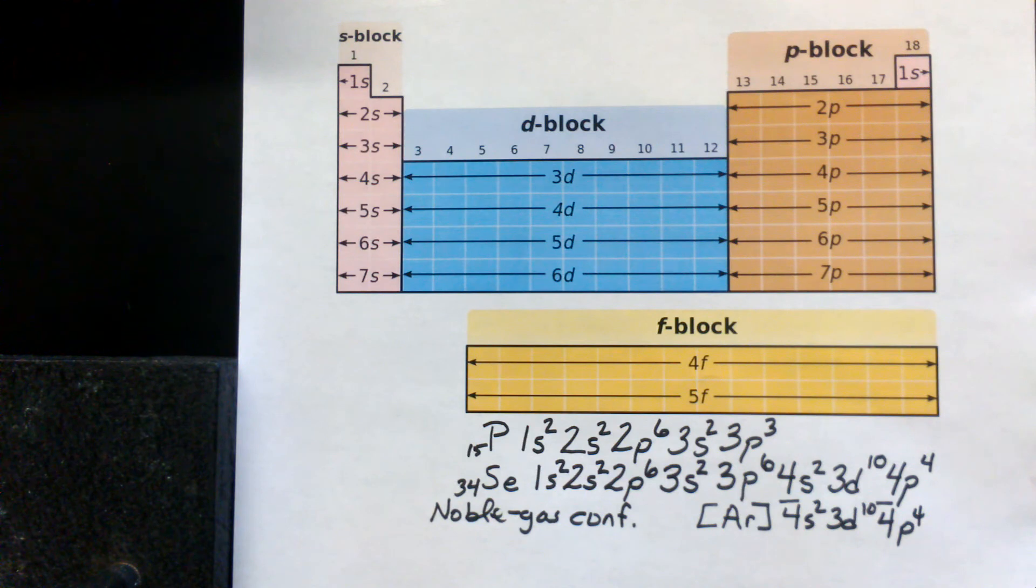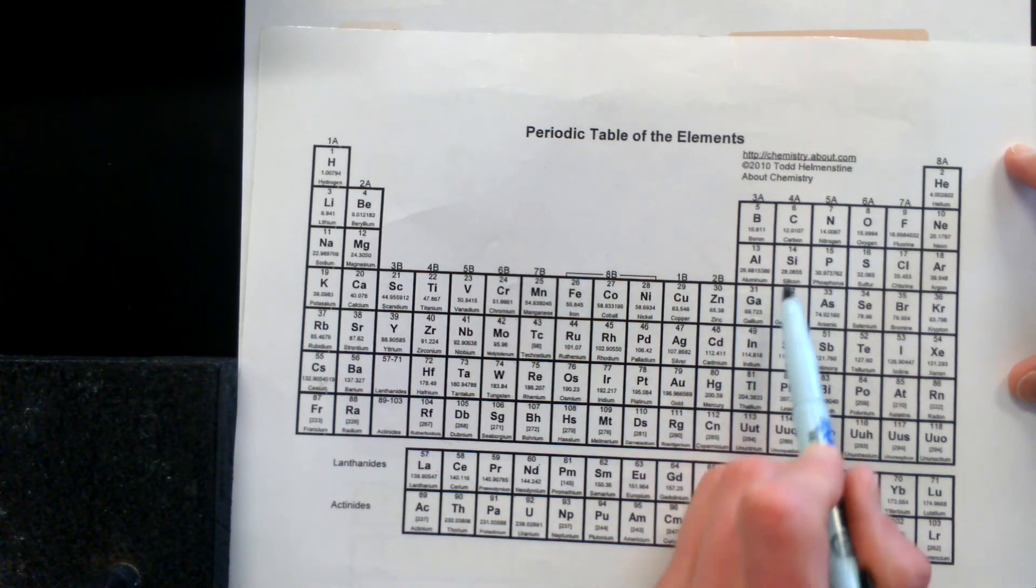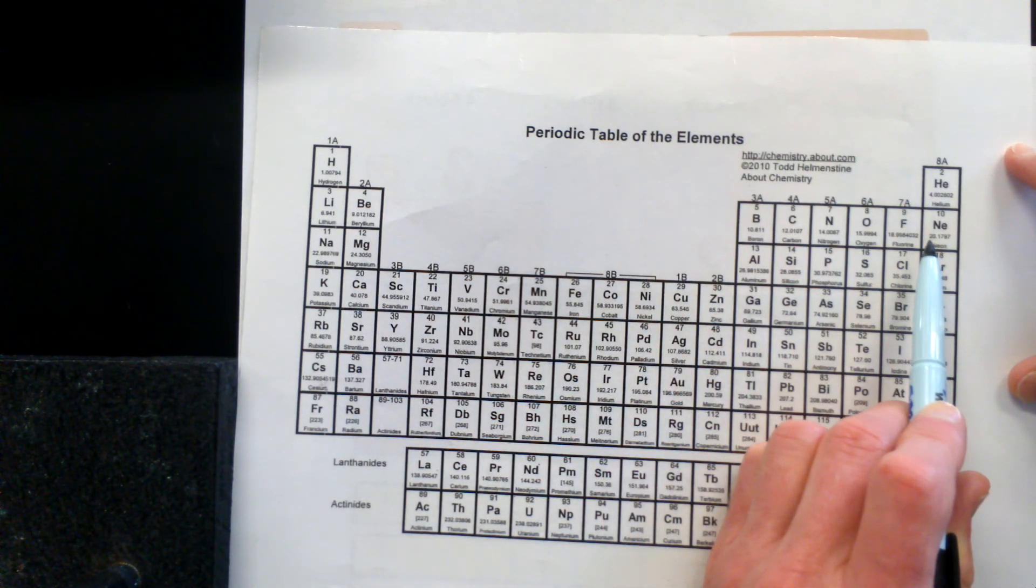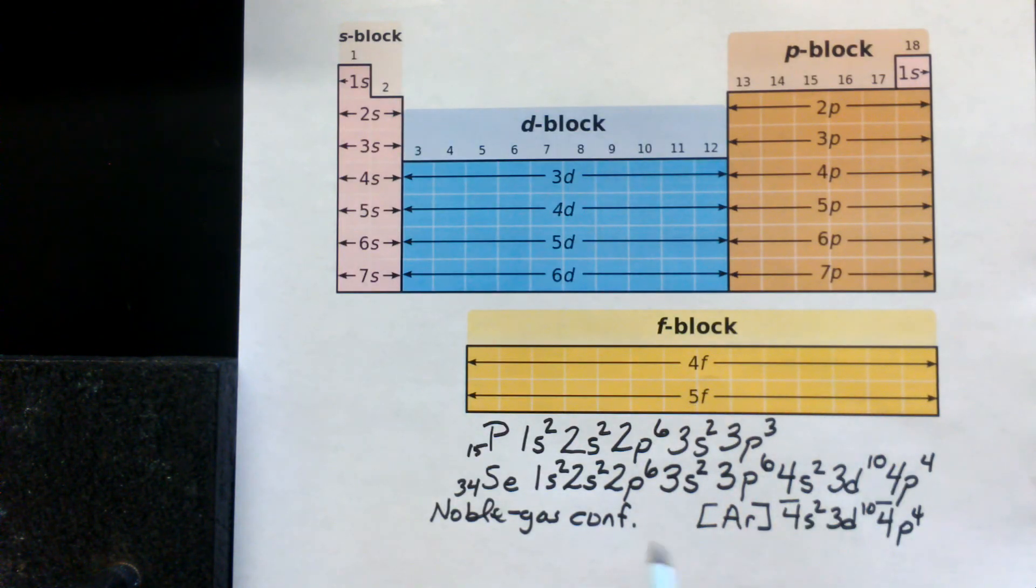So a Noble Gas configuration. If we were to do the same thing with this phosphorus, we would backtrack from phosphorus, go backwards to the previous Noble Gas, which would be neon. So for phosphorus Noble Gas configuration, we would have neon, then we would move forward, and we would have 3s2, 3p3. So a Noble Gas configuration.